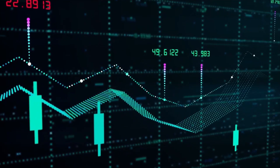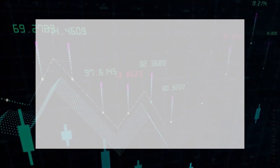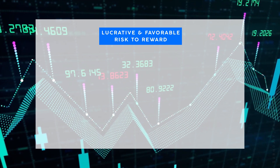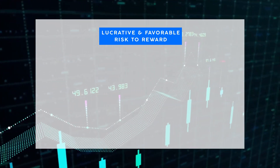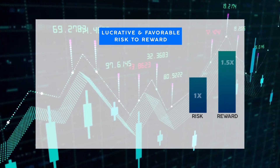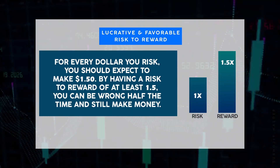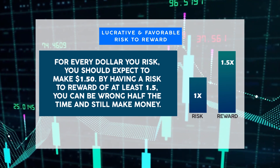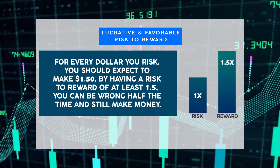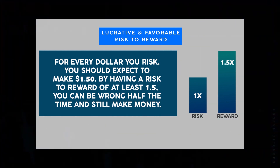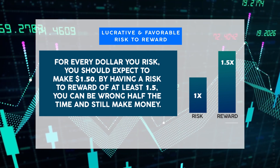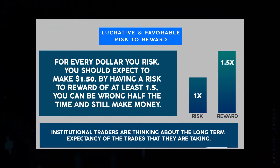What is a lucrative and favourable risk-to-reward? There's no fixed answer, but I would say strive to have at least a minimum of 1-to-1.5 — meaning for every dollar you risk, you should expect to make $1.50 back. By having a risk-to-reward of at least 1-to-1.5, you can be wrong half the time and still make money. This is what institutional traders are thinking about: the long-term expectancy of the trades they are taking.